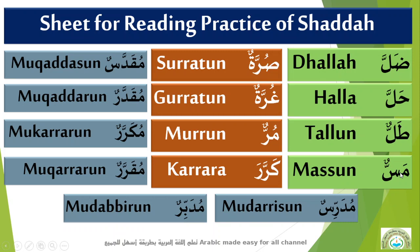Here: massun, massun, surratun, surratun, burratun, murrun — the 'ra' sound is coming two times, and this has damma, here also damma, here also damma. Karra, karra — the sound is coming two times. Muqaddarun, muqaddarun — that 'dal' sound is coming two times. Mukarrarun, mukarrarun — again the 'ra' sound is coming two times.